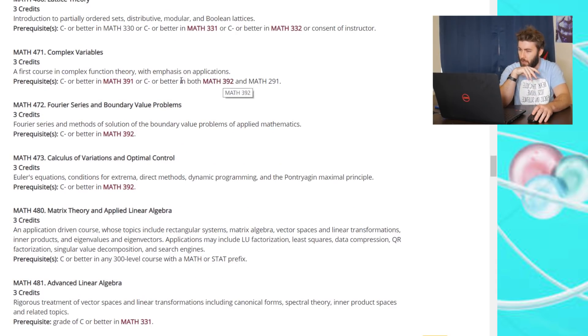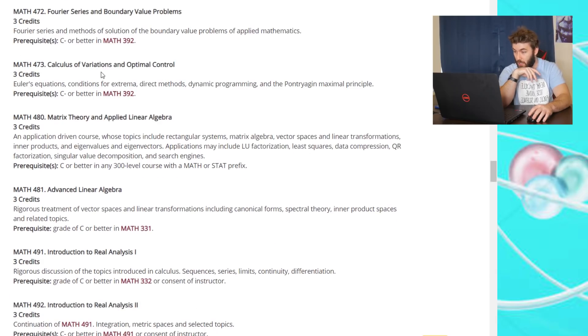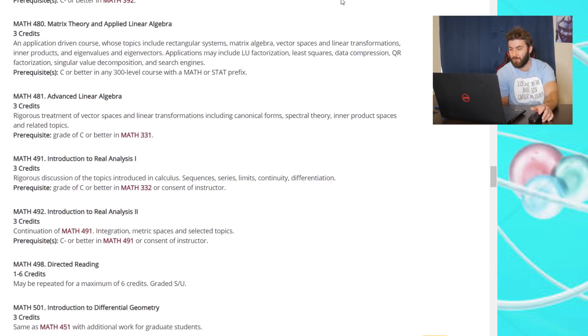Fourier series and boundary value problems. That sounds kind of monotonous. Calculus of variations, Euler's equations, conditions for extrema, direct methods, dynamic programming, and the Pontryagin principle. Advanced linear algebra, rigorous treatment. We're still in the undergrad part. This is kind of amazing. Rigorous treatment of vector spaces and linear transformations, including canonical forms, spectral theory, inner product spaces, and related topics.